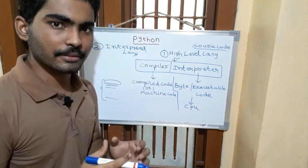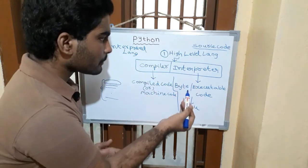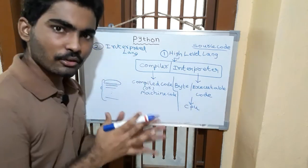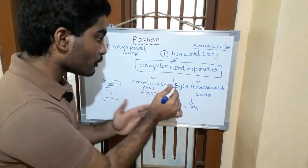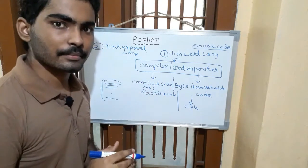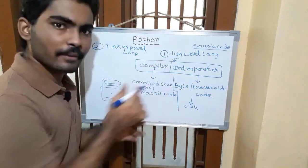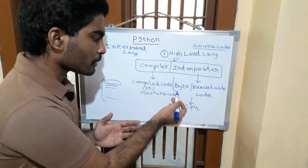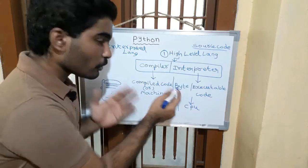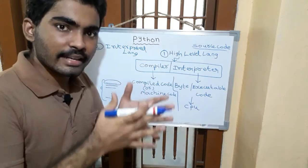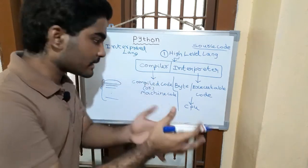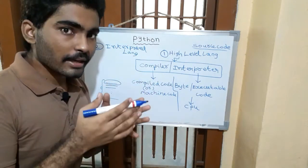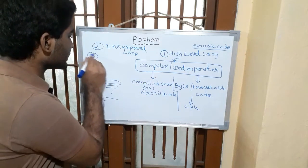Python is an interpreted language. The interpreter converts the high-level language into intermediate code, and then into executable code. This byte code is platform independent. For example, if you have a Python program in Windows, the interpreter converts it into byte code. You can then use that same byte code on Mac OS, Linux, or Ubuntu — it is platform independent. So Python is a portable language.